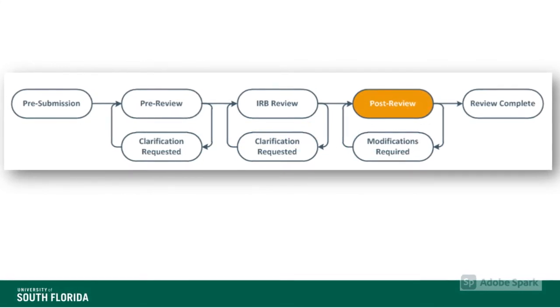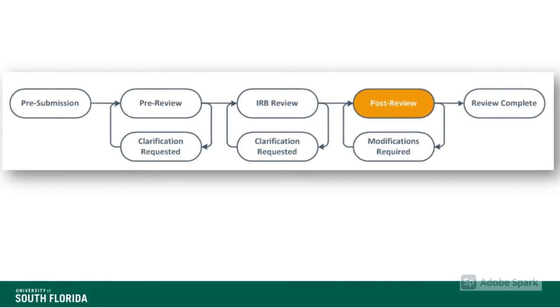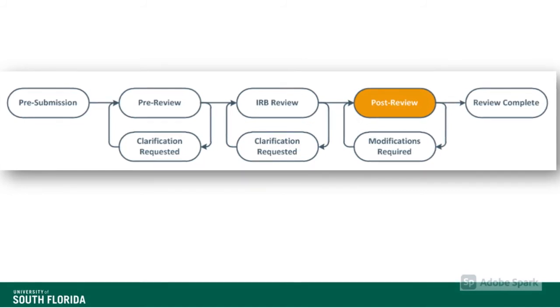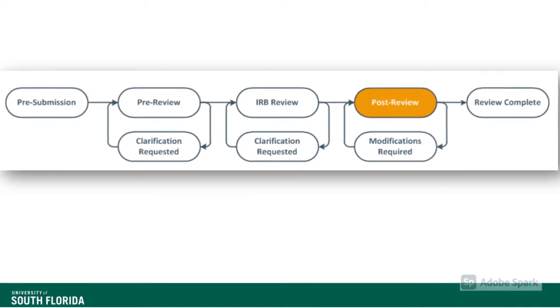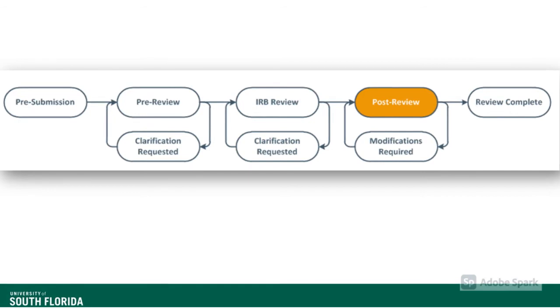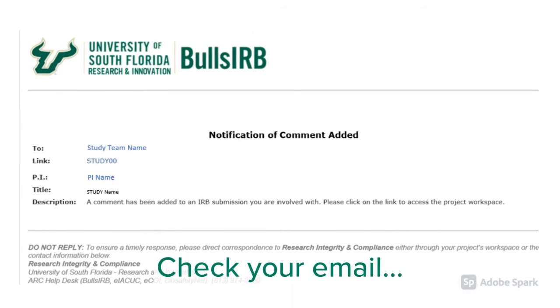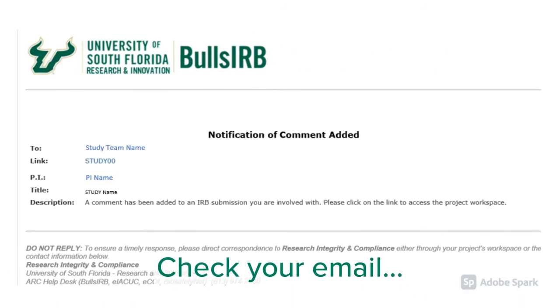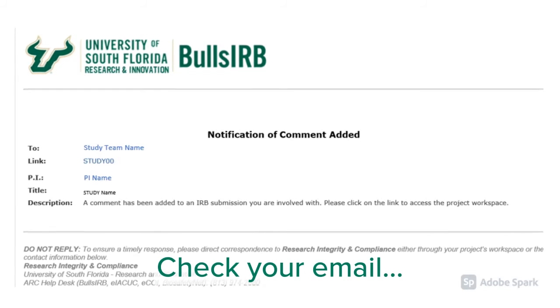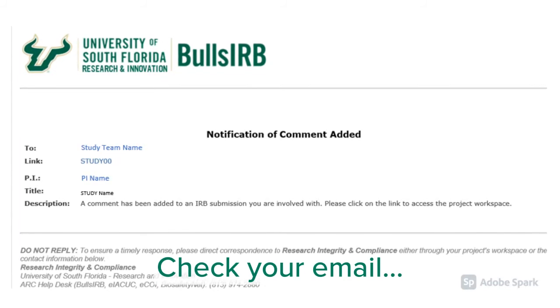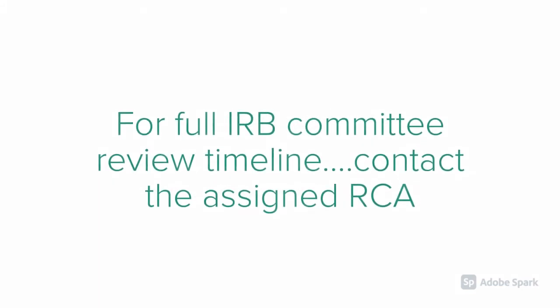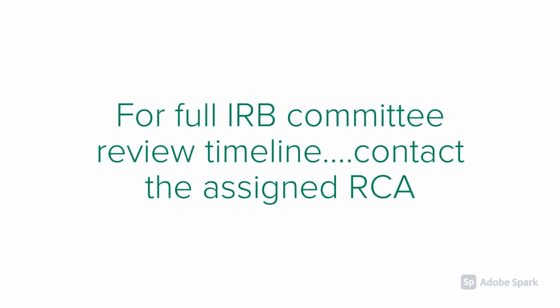Once acceptable, the IRB chairperson officially approves your study and the application moves to the post-review phase. During this short phase, the RCA will create and send you the study approval letter. You will receive an email notification once the letter is sent, and the study approval letter will also be available in Bulls IRB. If your application is being reviewed by a full IRB committee, please contact the RCA who is working on your study to discuss the study workflow and timeline in depth.